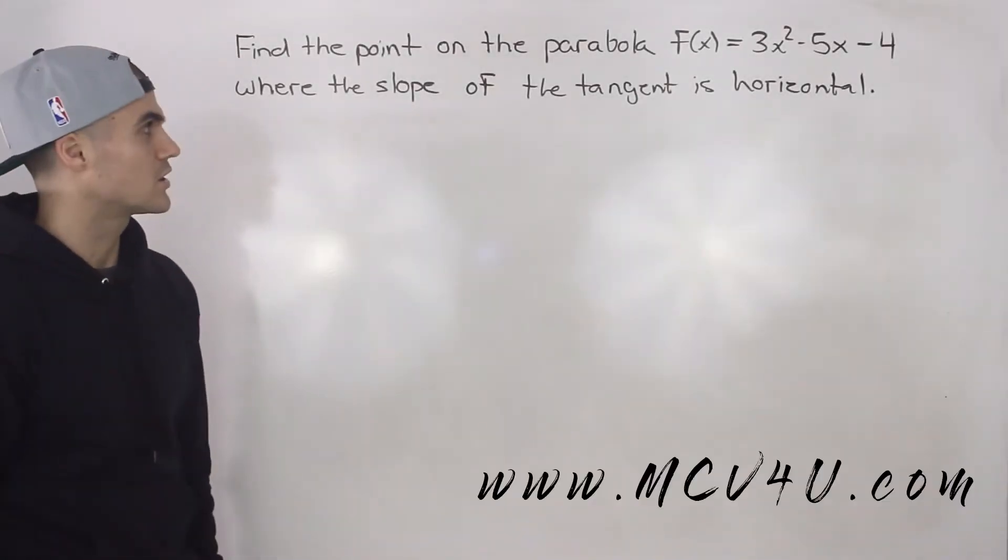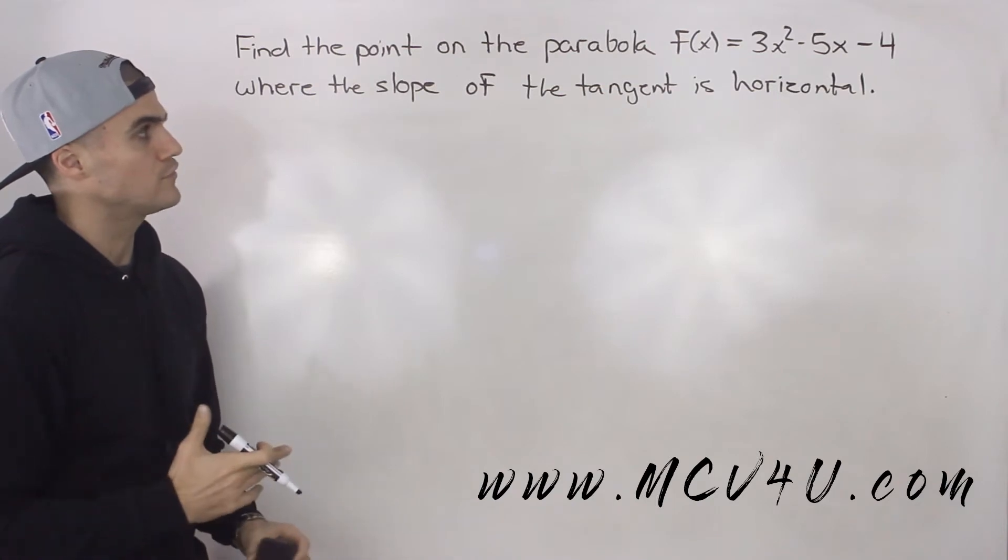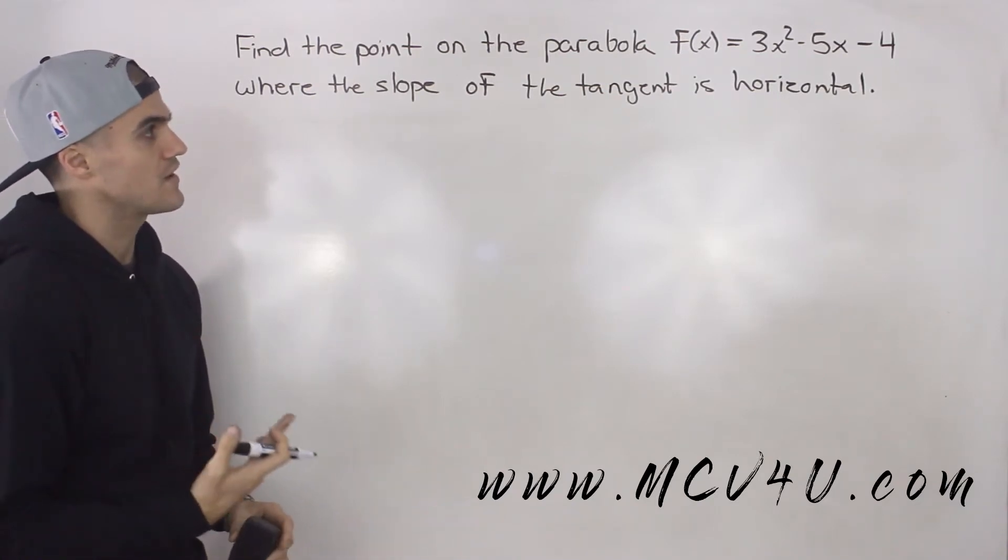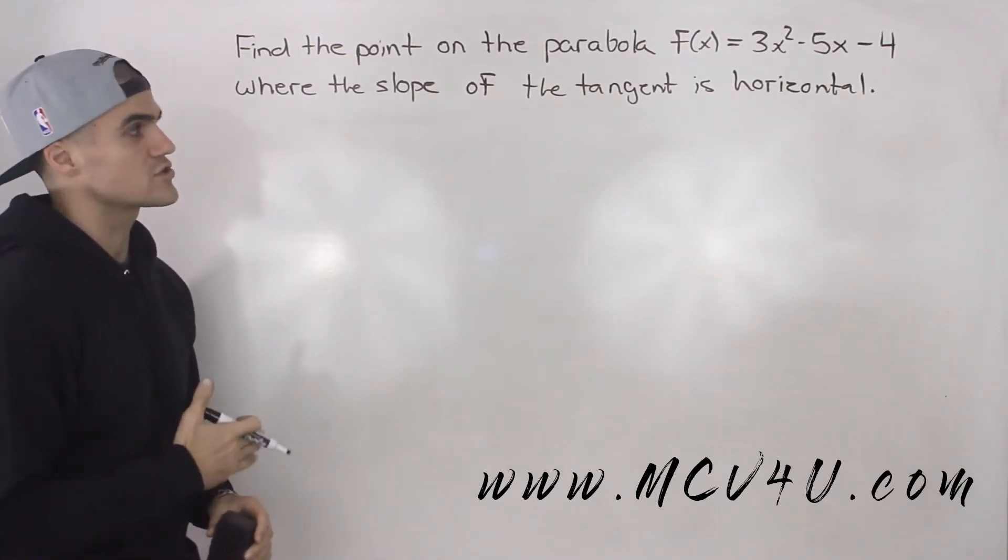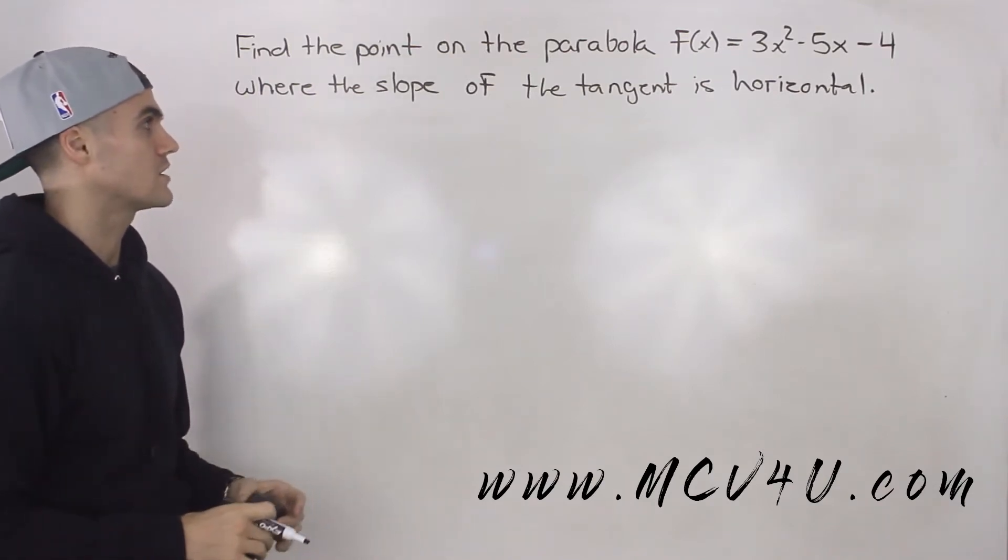What's up everybody, welcome back. Patrick here. Moving on to another question, we have to find the point on the parabola f(x) = 3x² - 5x - 4 where the slope of the tangent is horizontal.